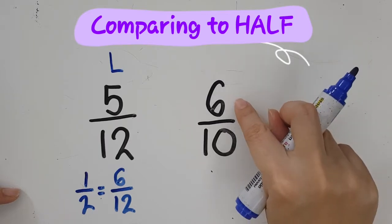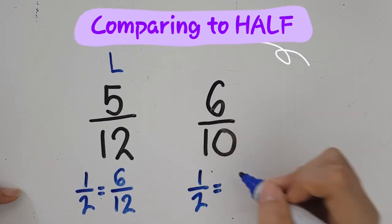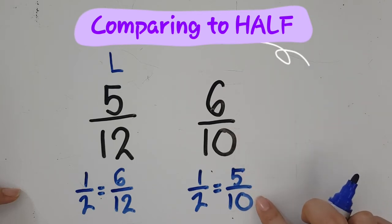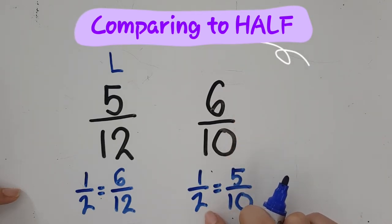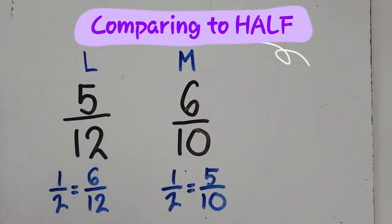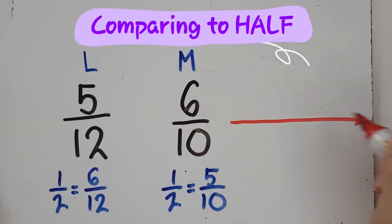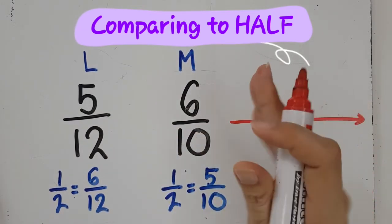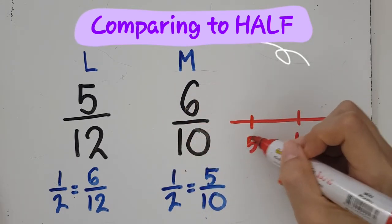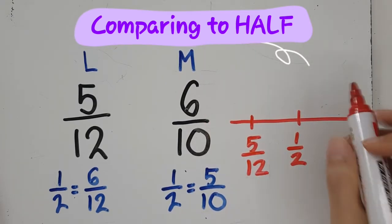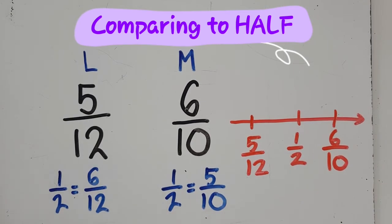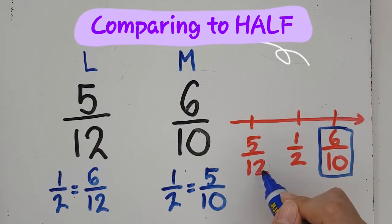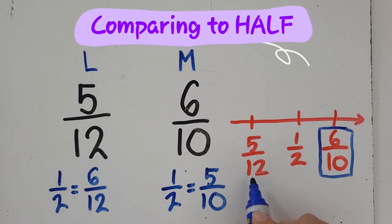Now, six-tenths. If I have ten equal parts, half would be five-tenths. But I have six-tenths. Six-tenths is more than five-tenths. Therefore, six-tenths is more than one half. Now, if I draw a number line and put half there, five-twelfths is less than half, so I put it on the left side of the number line because numbers on the left are smaller. Five-twelfths will be on the left side, and six-tenths is more than half, so it will be on the right side. So six-tenths is the bigger fraction, and five-twelfths is the smaller fraction.